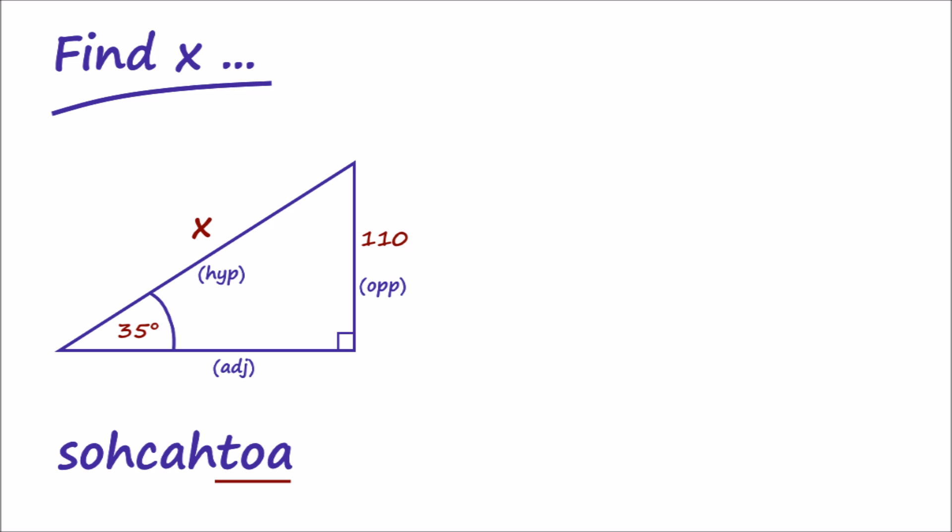The two sides we are concerned with here, however, are the opposite and the hypotenuse, x. Therefore, the relation we need to use is this one. Sin alpha equals the opposite over the hypotenuse, where alpha is the angle.